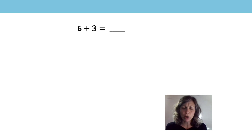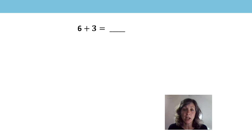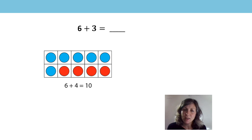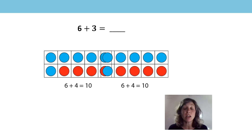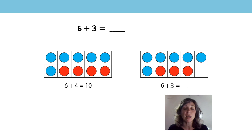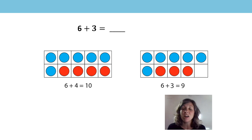What about if we look at this now: 6 plus 3. What can we use to help us solve this really quickly? Did you think about this fact: 6 plus 4 is equal to 10? We know this because we know our number bonds to 10. And 6 plus 4 is very close to 6 plus 3, but it's just 1 less. So what is 1 less than 10? That's right, it's 9. 6 plus 3 is equal to 9.